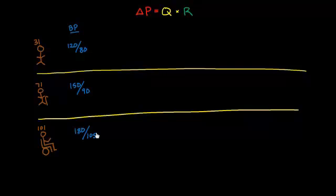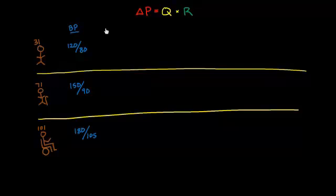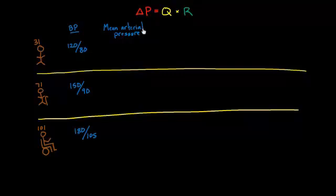My blood pressure is 120 over 80. To figure out my mean arterial pressure — meaning the average pressure in my arteries — I can use my blood pressure to get a good estimate. My mean arterial pressure equals one-third times my systolic plus two-thirds times my diastolic, because the heart spends about a third of its time beating and two-thirds relaxing. The relaxing pressure is the diastolic, which is 80, and that works out to about 95.